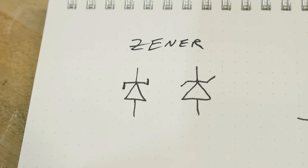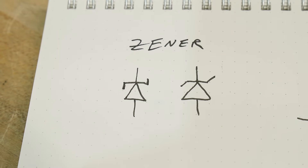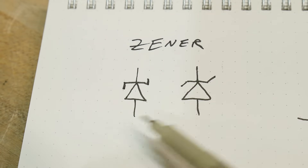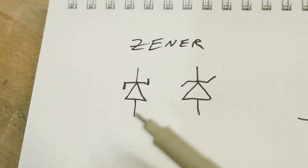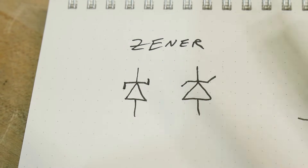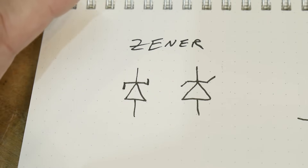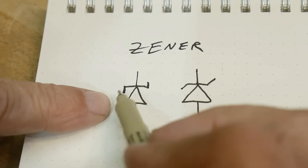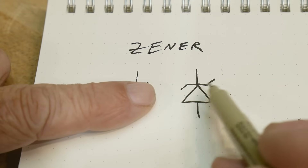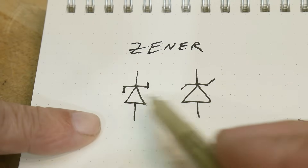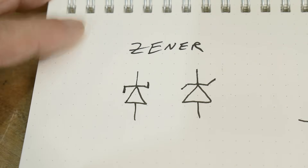Zener diodes are named after Mr. Zener who discovered the Zener effect, which we'll talk about later. You can draw them with right-angle arms or with slanted arms — you see it both ways. Those are Zener diode symbols.